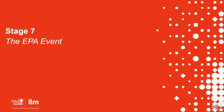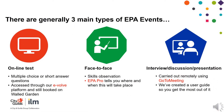The EPA Event. There are generally 3 main types of EPA events. We have the online test which consists of multiple choice or short answer questions, accessed through our Revolve platform and still booked on Walled Garden. A face to face assessment which entails skills observation — EPA Pro will tell you where and when this will take place. And an interview, discussion, or presentation that is carried out remotely using GoToMeeting. We have created a user guide so you can get the most out of it.